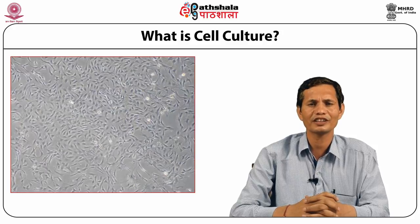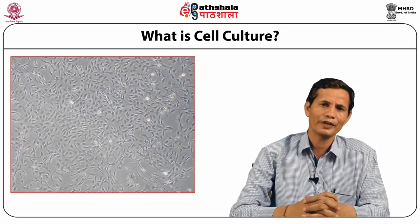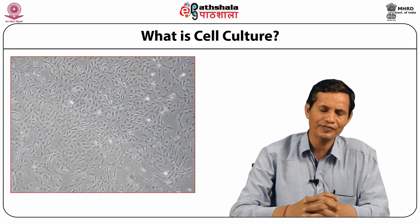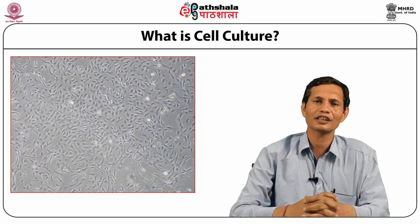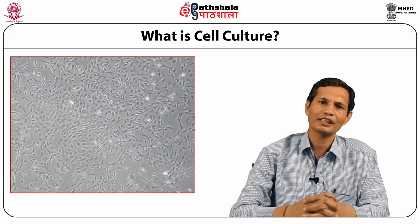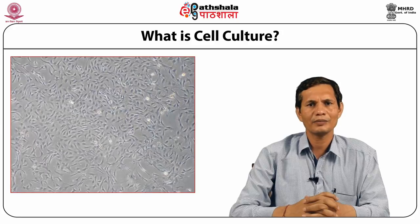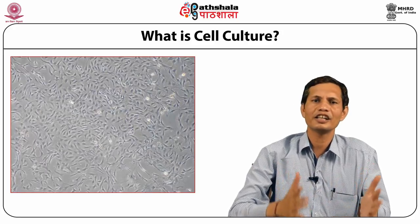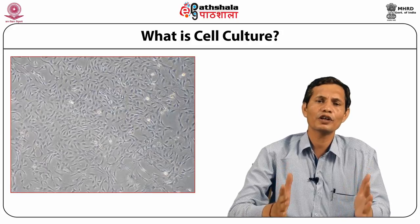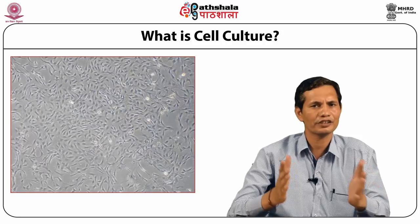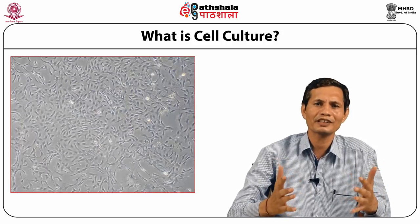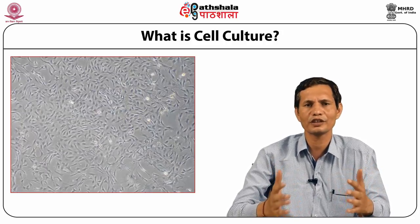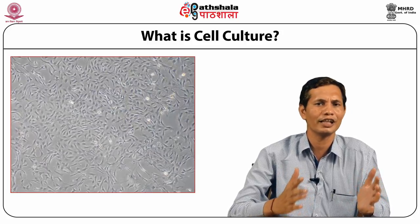The history of animal cell culture is very old, although basic development started in the last 50 years only. The first person, Roush, was able to maintain animal cell culture from chick embryo in the year 1885. Another successful person, R. Harrison, maintained animal cell culture technology in 1907. Modern animal culture technology started in the last 15 years, utilizing animal cell culture for vaccine production, useful substance production, virus isolation, and other purposes.